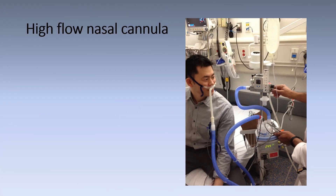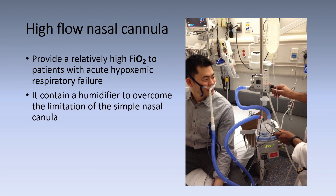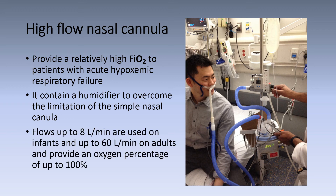Another example of a high flow system is the high flow nasal cannula. It provides a relatively high FiO2 to patients with acute hypoxemic respiratory failure. It contains a humidifier to overcome the limitation of the simple nasal cannula. Flow up to 8 liters per minute is used on infants and up to 60 liters per minute on adults, and can provide an oxygen percentage of up to 100%.